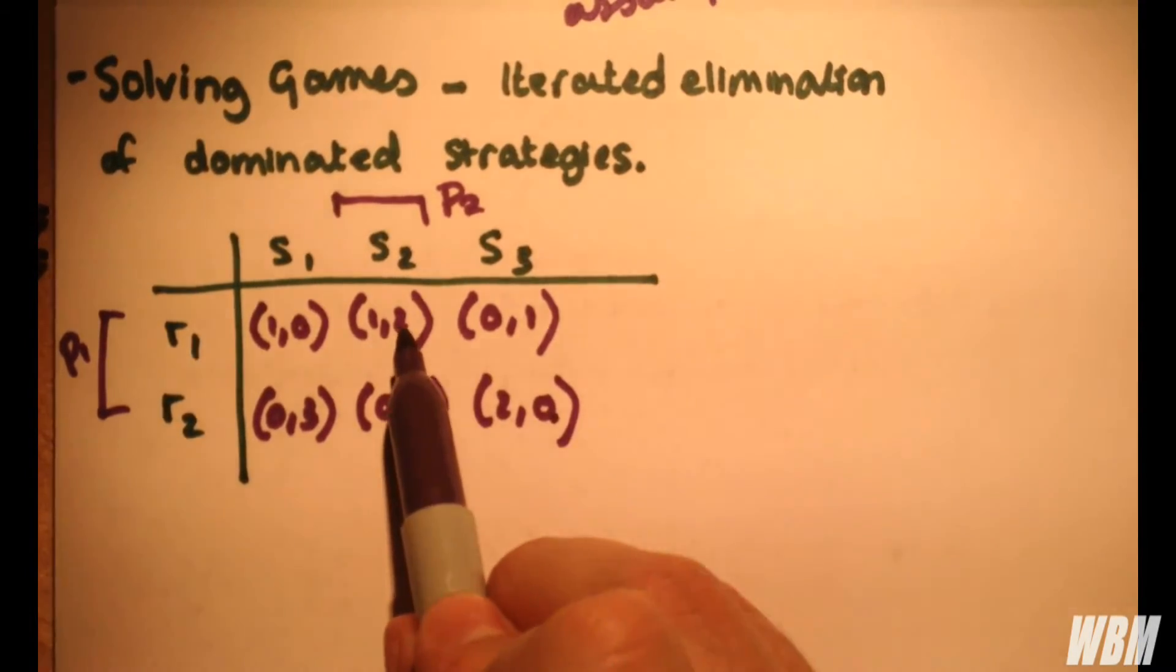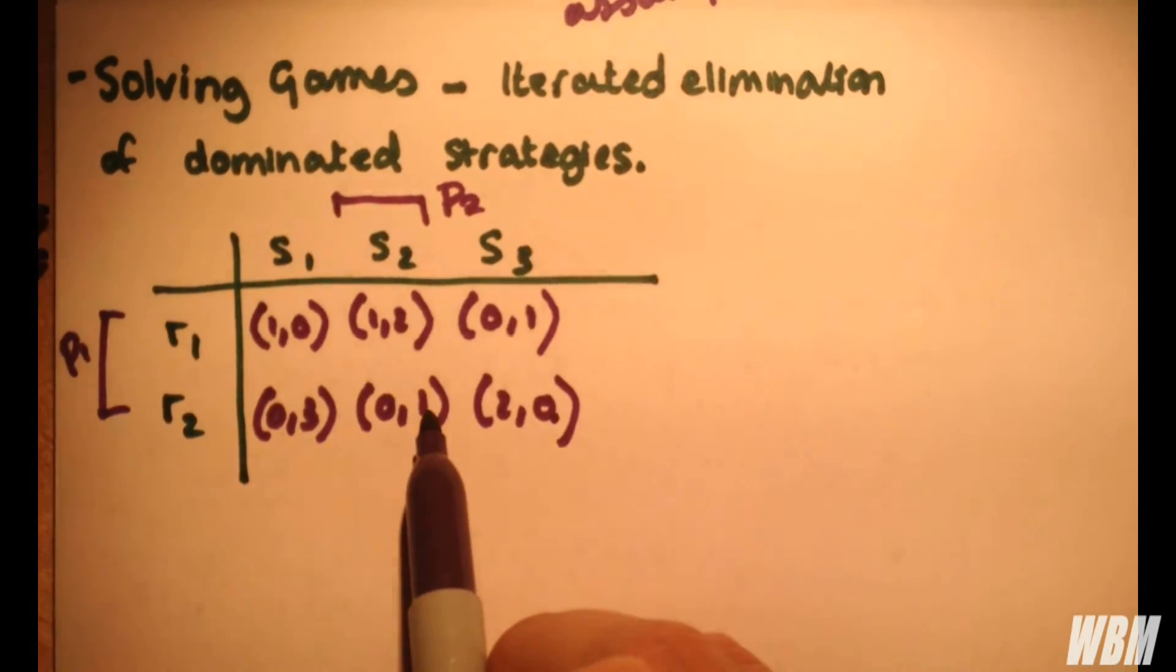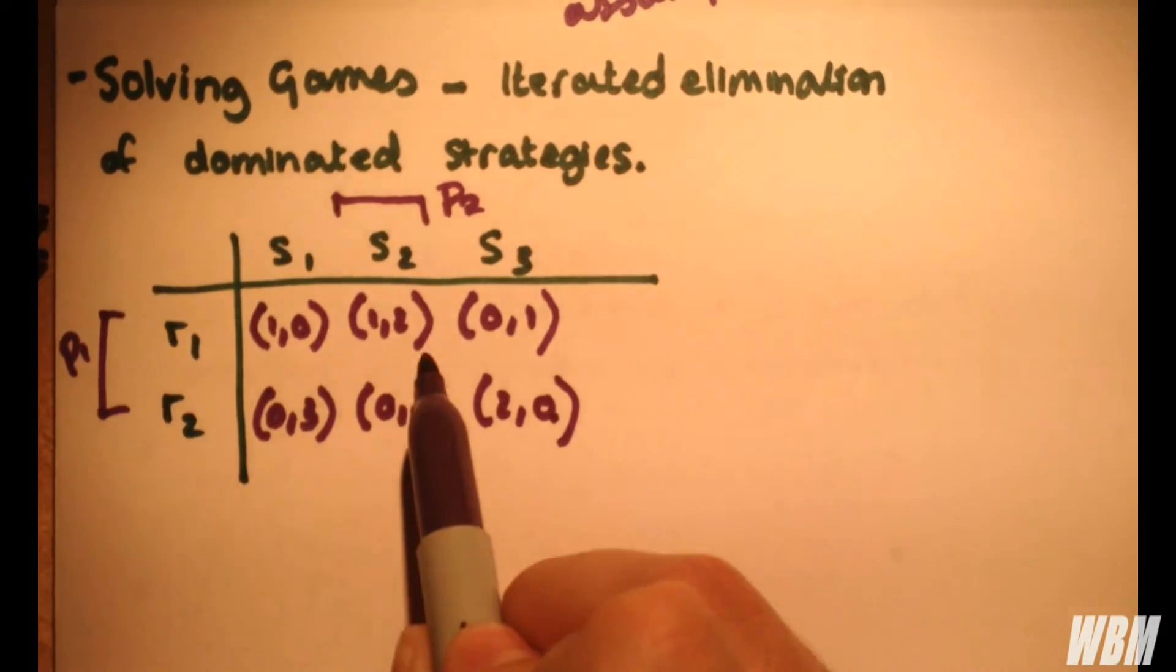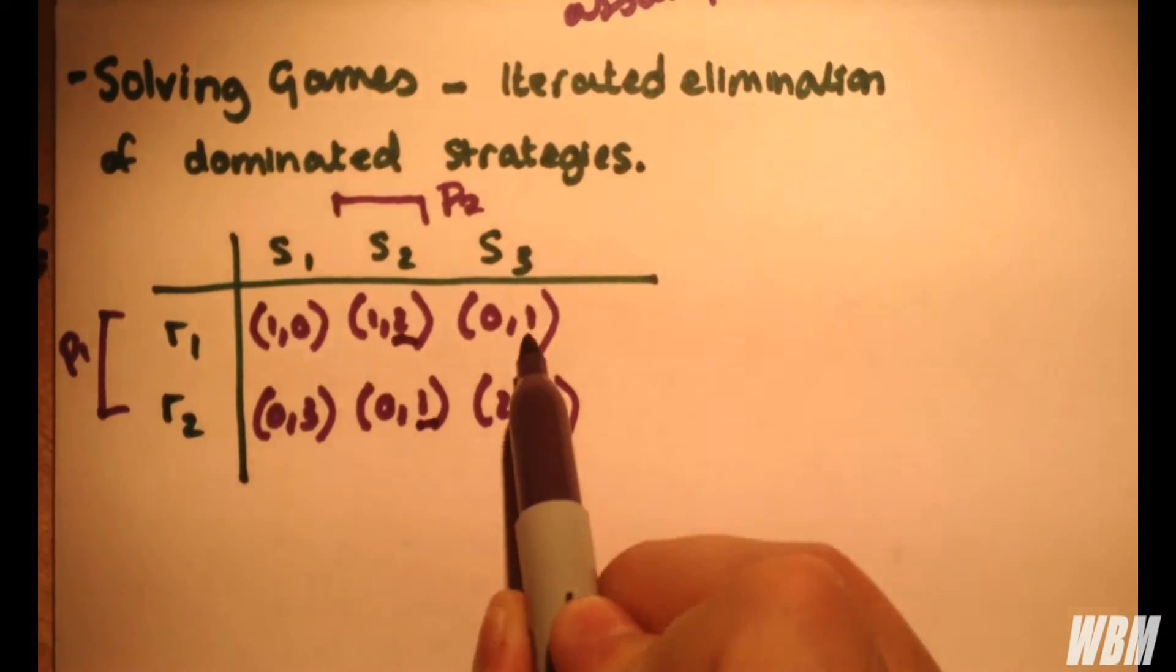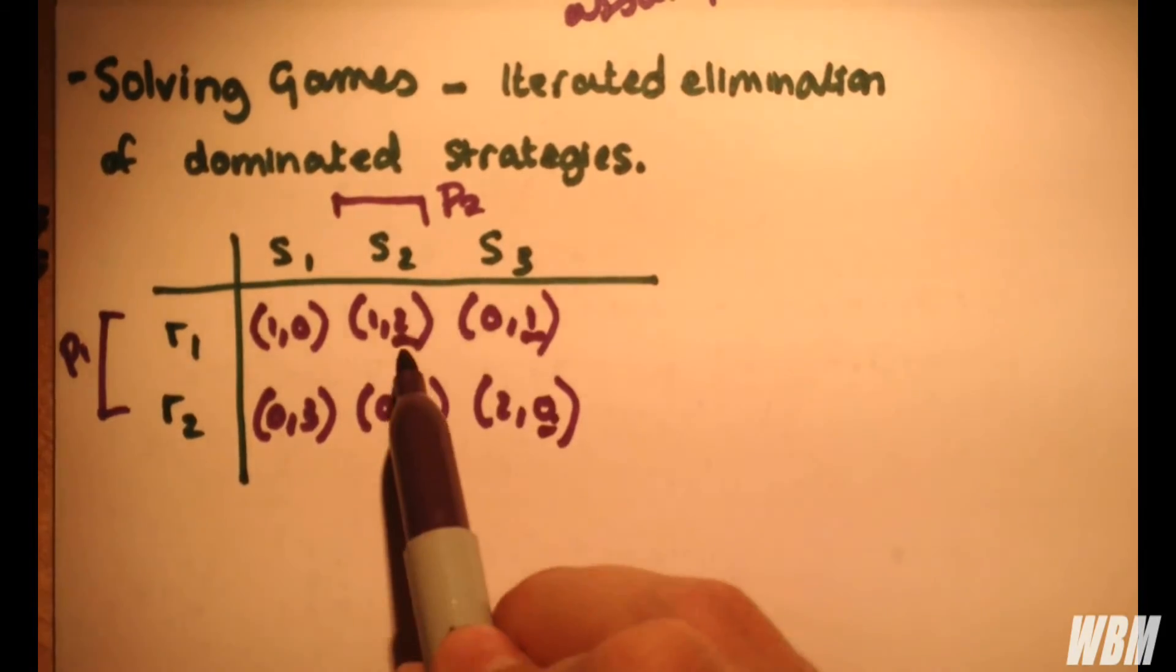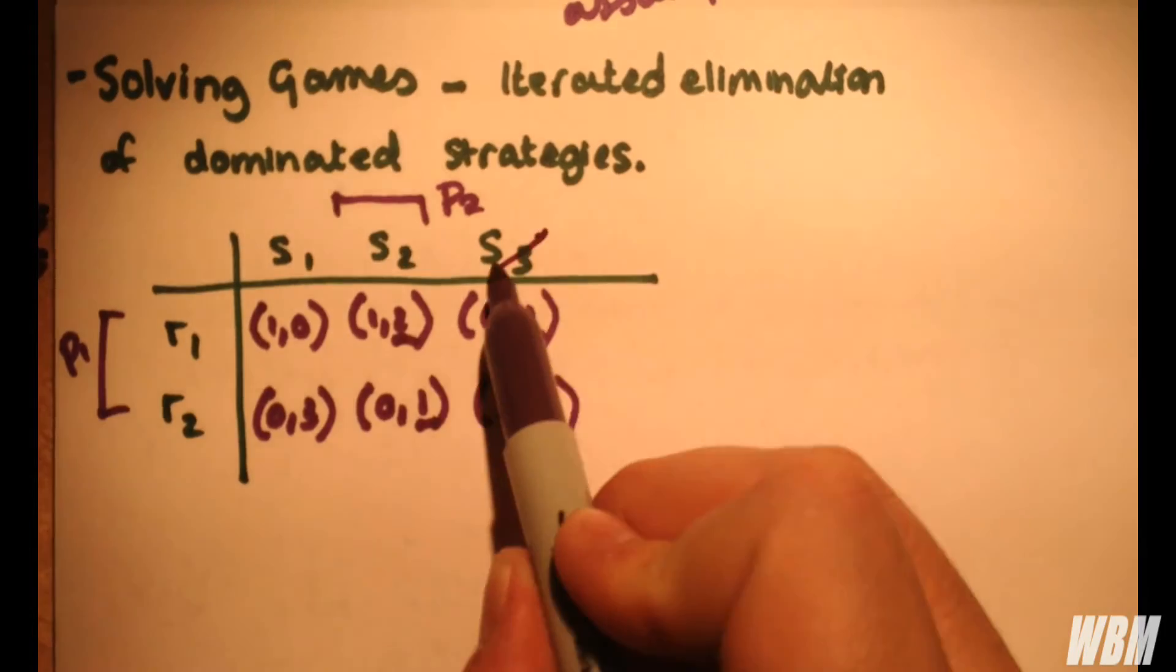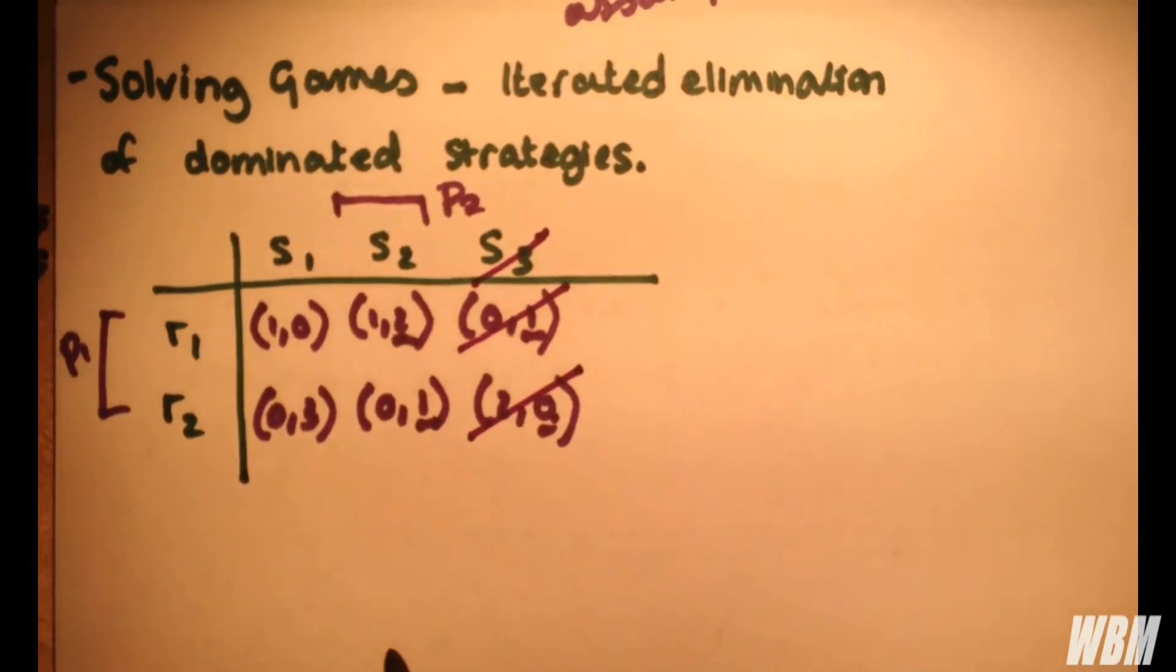So what we notice here is that S2, we have 2 greater than 1, and 2 greater than 0, 1 greater than 0, and 1 less than 3. Well, what you'll notice here, it would appear that S2 dominates S3, because 2 is larger than 1, and 1 is larger than 0. So we can eliminate strategy 3.